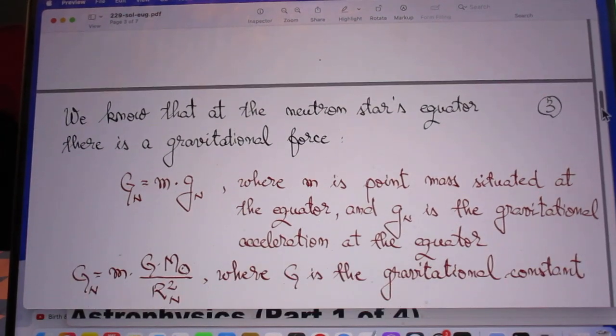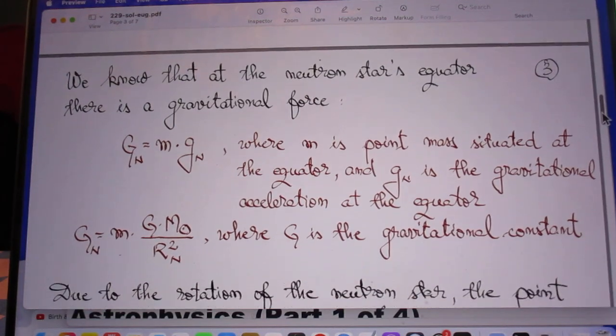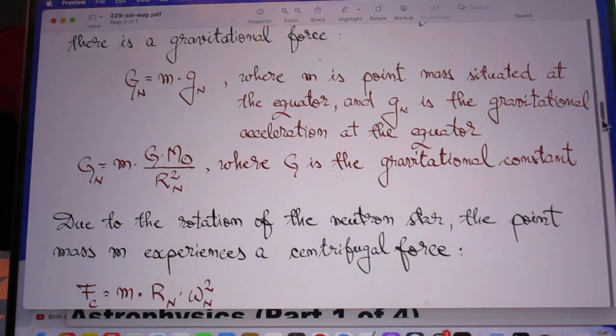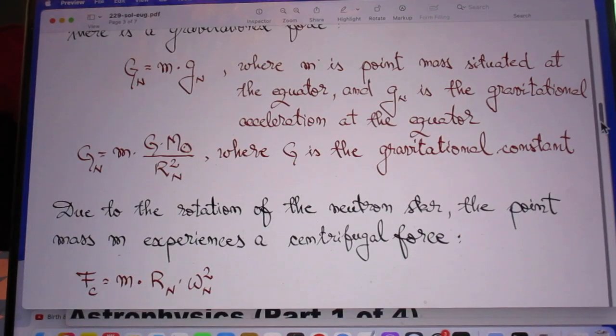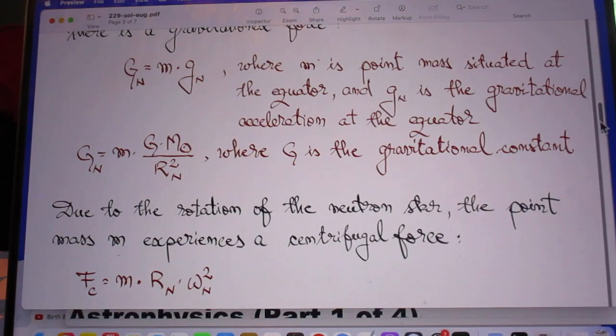We know that at the neutron star's equator, there is a gravitational force. That gravitational force is given here in his equation. Capital G is the gravitational constant.